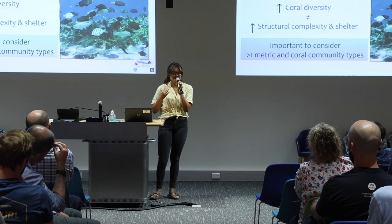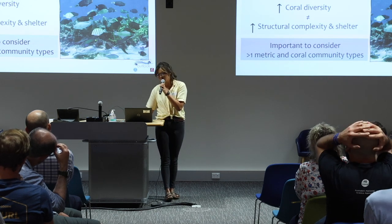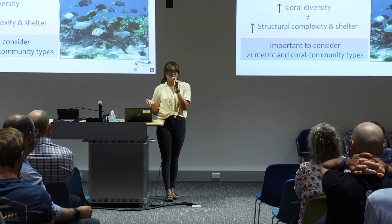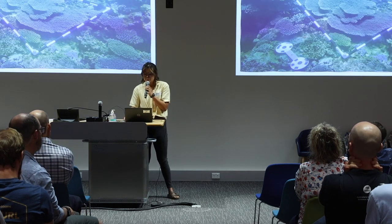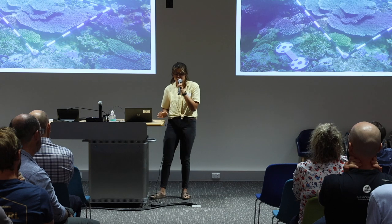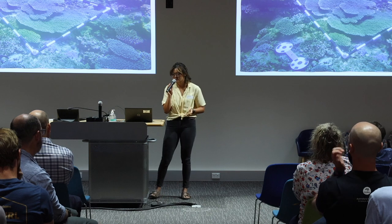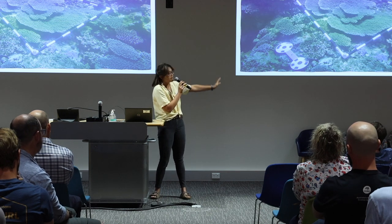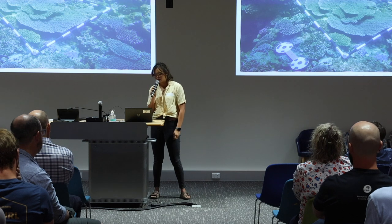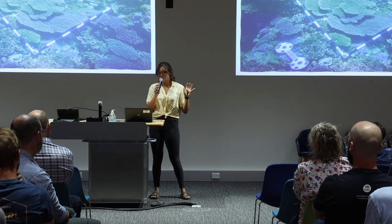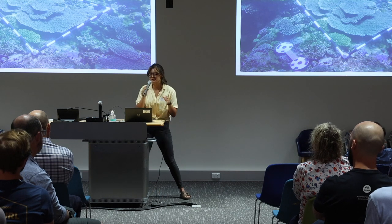Our study suggests it's important to consider more than one metric and also the coral community type when trying to understand the impact of structural complexity on fish communities. This chapter has made a nice segue to look at these metrics in real life — we've been out collecting metrics within a one-by-one quadrat and also testing whether those metrics can be collected using photogrammetry as a comparison.